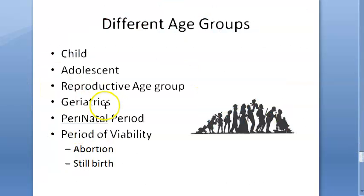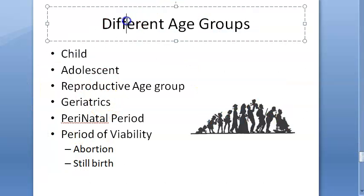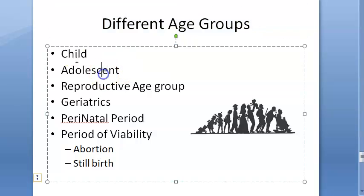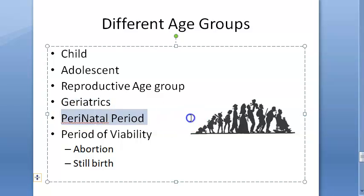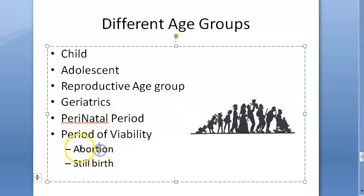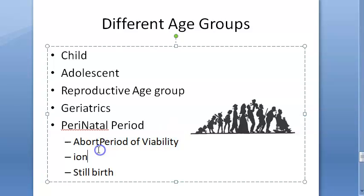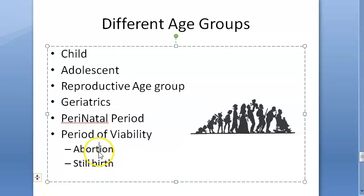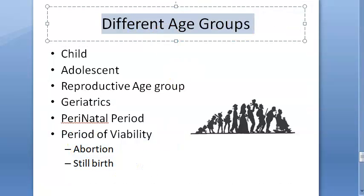Let us look at age. Different age groups exist: child, adolescent, reproductive age group, geriatrics, perinatal period, period of viability for a baby, abortion, and stillbirth. These are all different age groups.